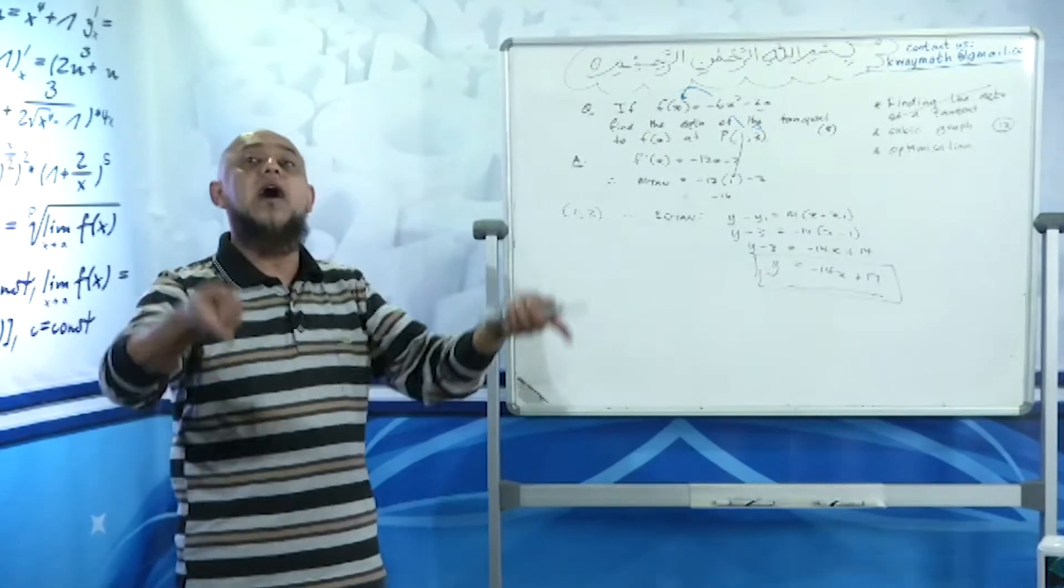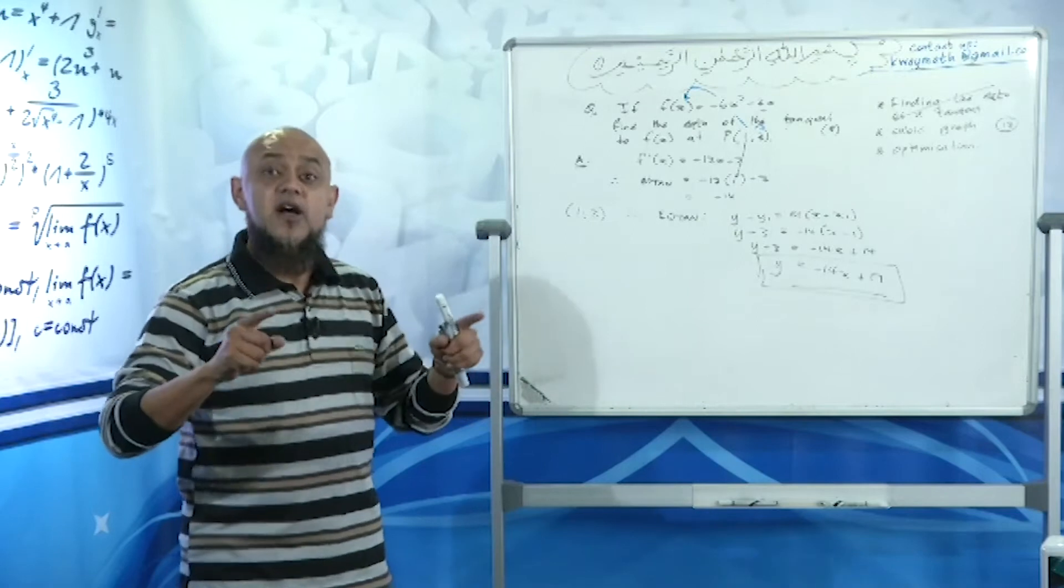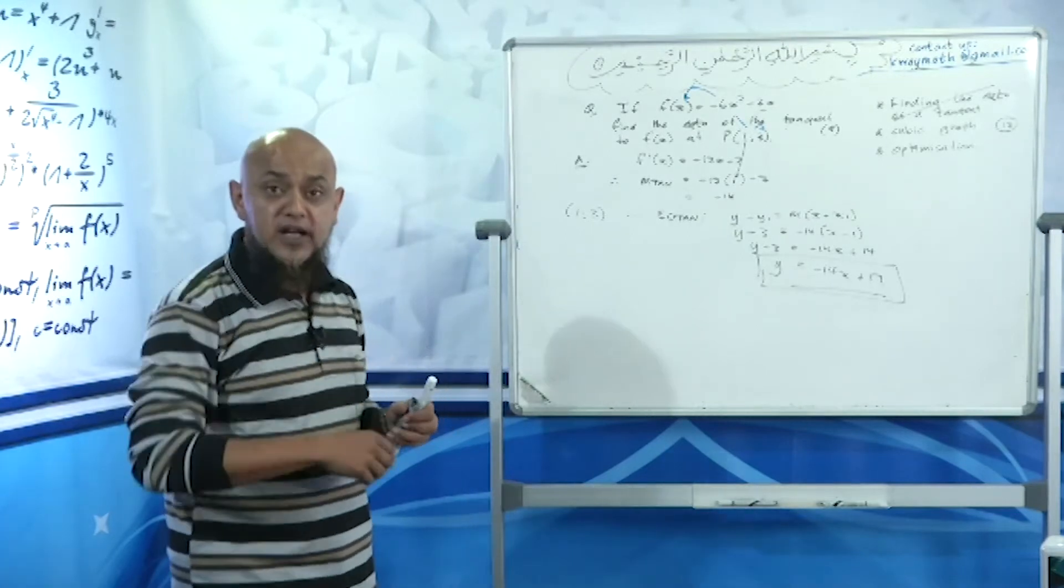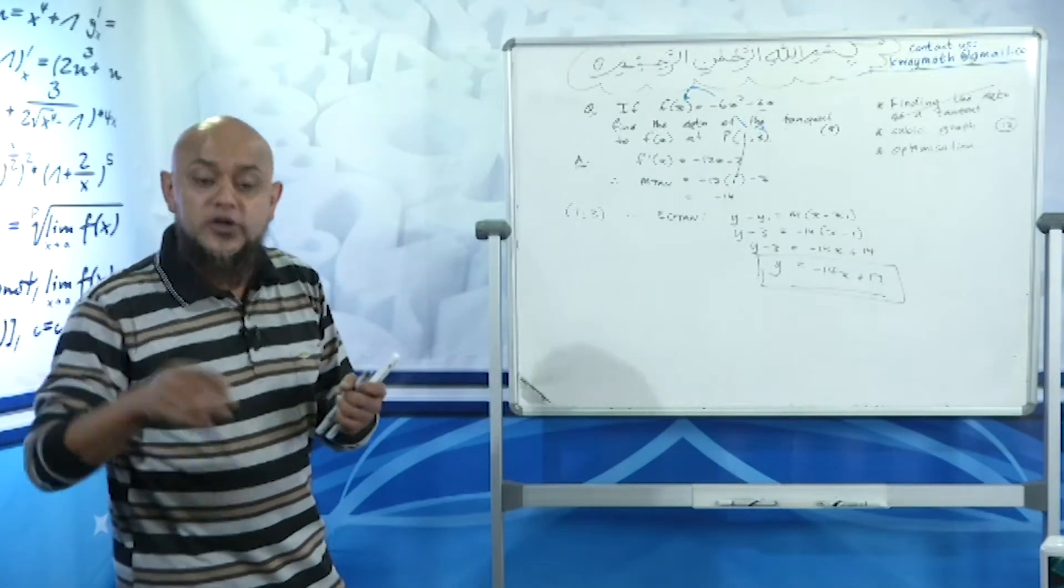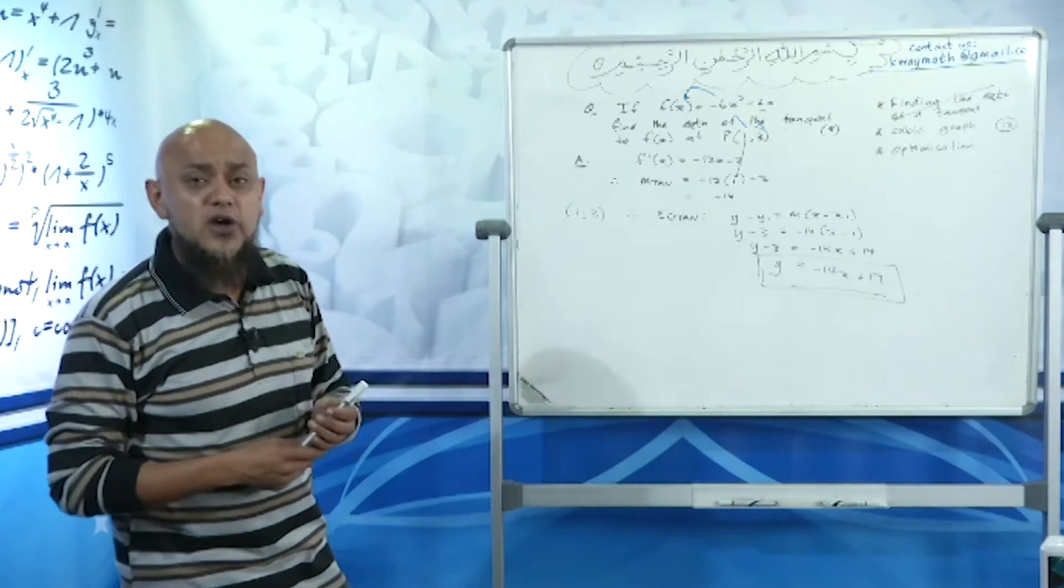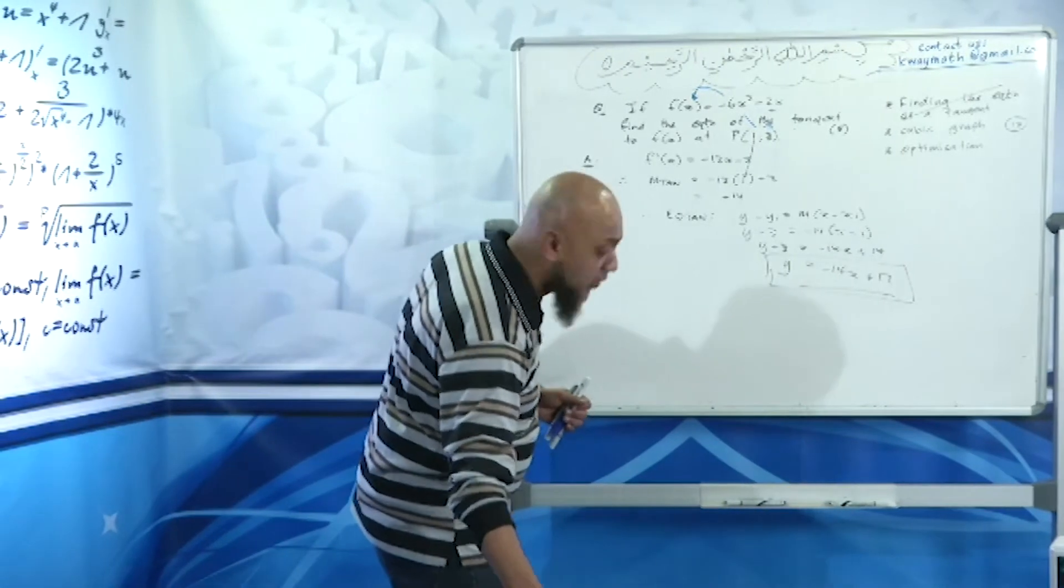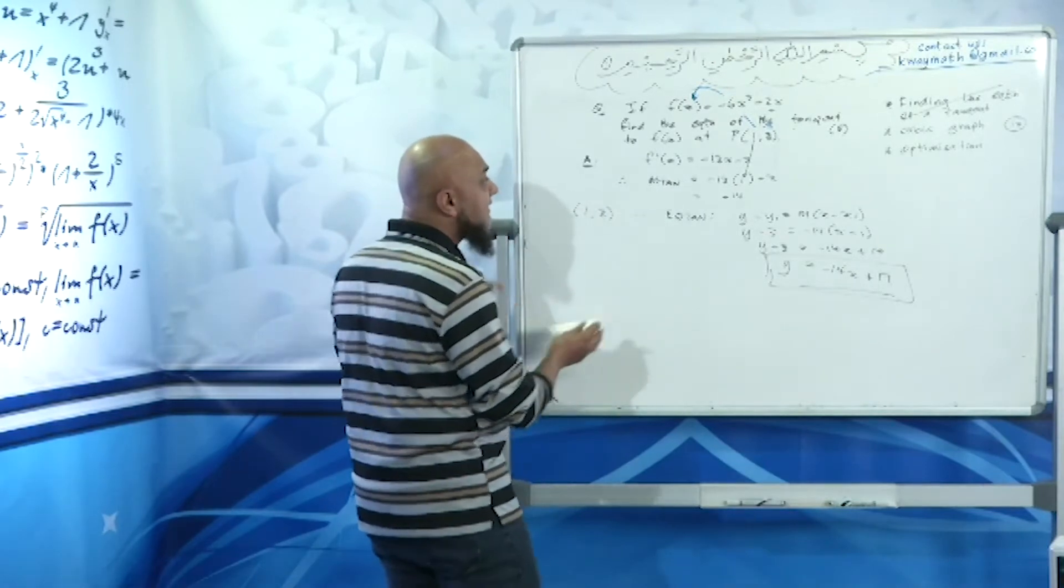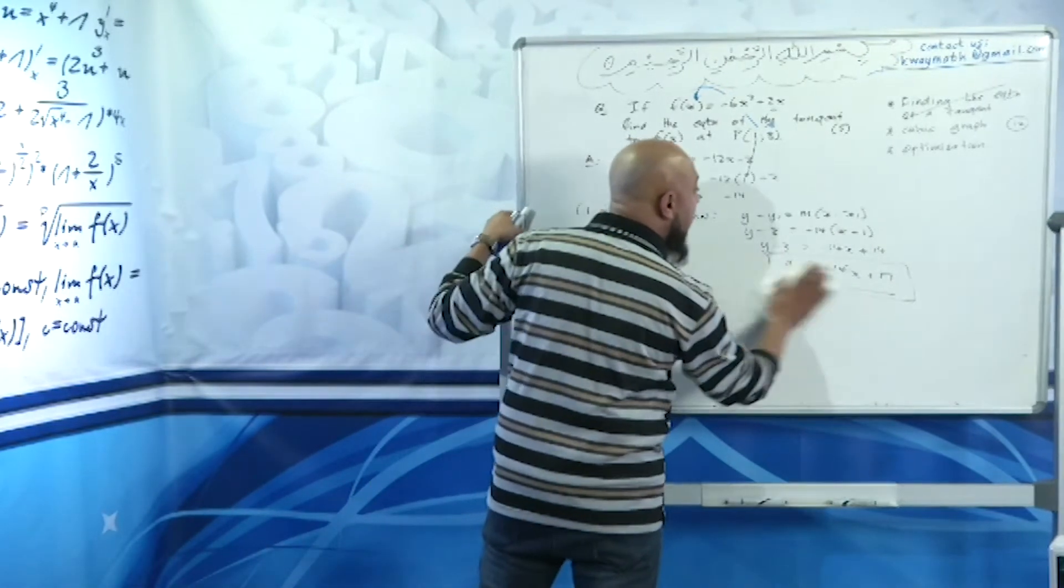We're going to do the forward and the reverse—how to sketch the graph and how to find the equation of a given graph. We're also going to be doing the point of inflection, which many of you still don't know what that is.